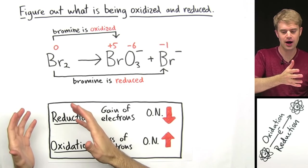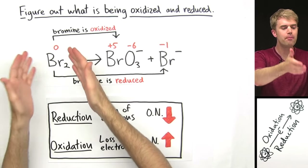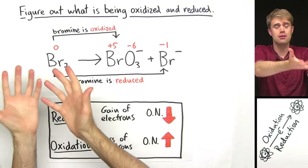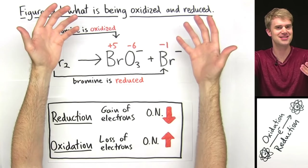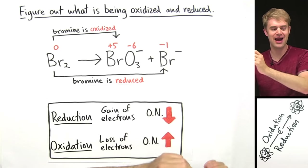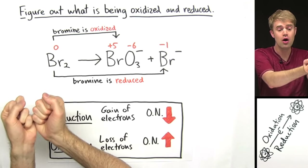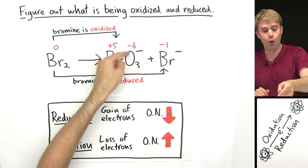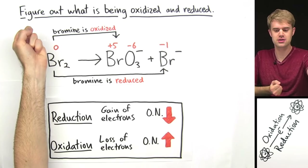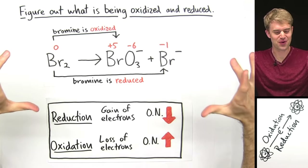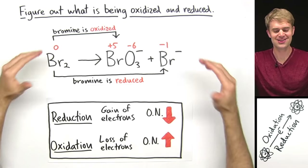So bromine — how can it be both oxidized and reduced? Well, think about it this way: in a chemical reaction there'd be a whole bunch of bromine atoms. Some of them would be oxidized and some of them would be reduced. It's not like every single one of them is being both oxidized and reduced. Some atoms are oxidized and other bromine atoms are reduced. Even in this equation, we have Br₂ on this side, which means there are two bromine atoms. One of those is oxidized and another is reduced.